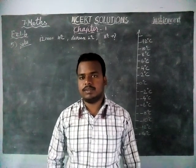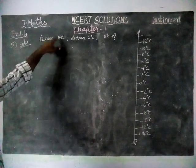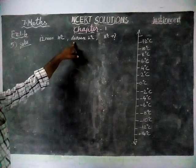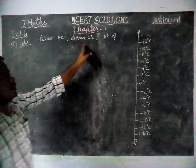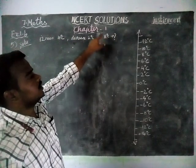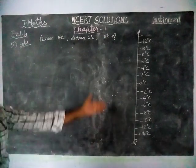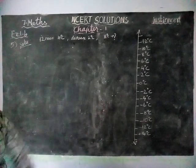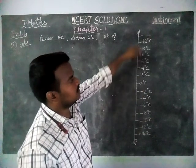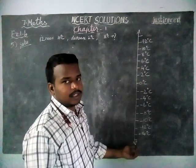In this question, they have given: at 12 noon the temperature is 10 degree Celsius, and per hour it is decreasing 2 degree Celsius. At what time will the temperature be 8 degree Celsius below 0? For that we have drawn the number line — this is 0 degree Celsius, this is the positive side, and below that are negative integers.